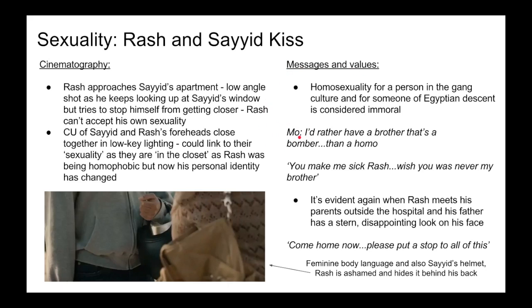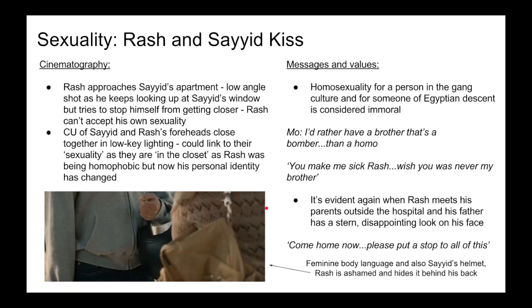This is evident when Mo says 'I'd rather have a brother that's a bomber than a homo' — meaning he'd rather have a terrorist than a homosexual — and tells Rash 'you make me sick, wish you were never my brother.' It's evident again regarding Rash's sexuality when he meets his parents outside the hospital in the closing sequence and his father has a stern, disappointed look and says 'come home now, please put a stop to all of this.' In this shot, Rash is also seen carrying Saeed's helmet in a feminine way, kind of like a purse, and he then hides it behind his back, showing that he's still insecure about his sexuality and scared to expose himself.